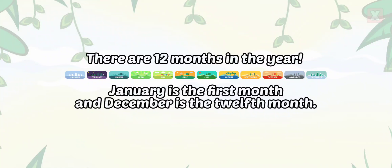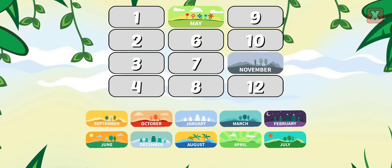12 months in the year. January is the first month and December is the 12th month. Drag the months into the correct order.